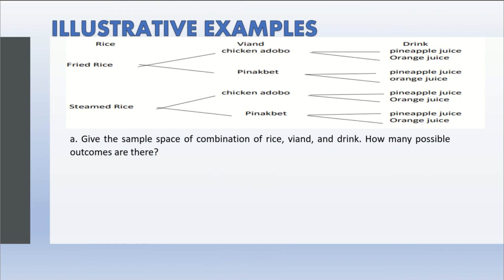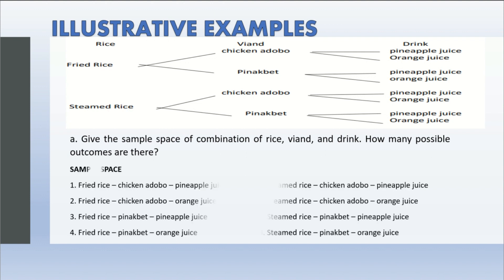So what are all the possible orders? Again, we call it sample space. First, we have fried rice, chicken adobo, pineapple juice. Or we can also have fried rice, chicken adobo, and orange juice. Fried rice, pinakbet, pineapple juice. Fried rice, pinakbet, orange juice. All in all, we have eight possible outcomes.